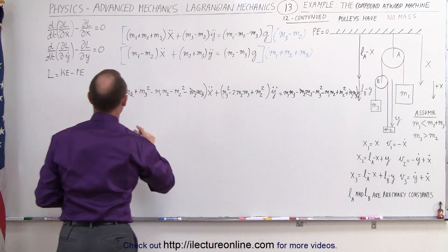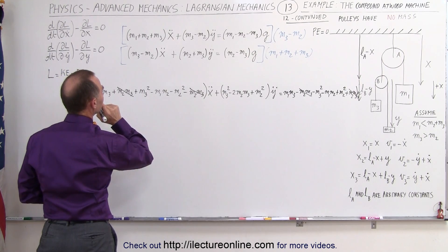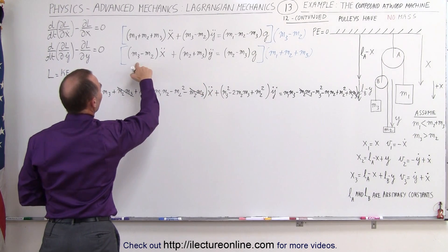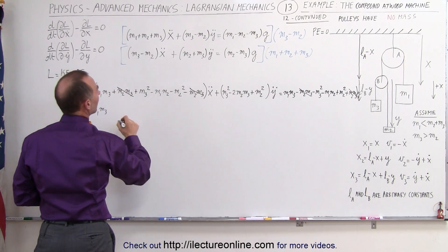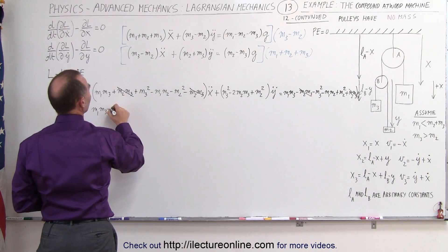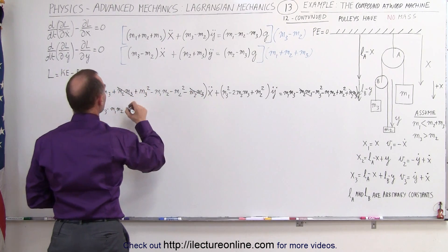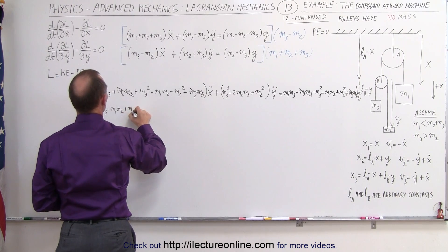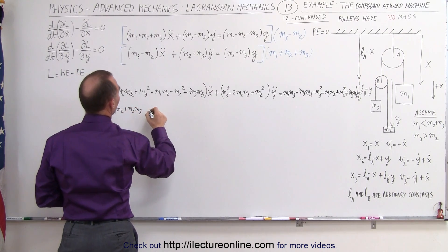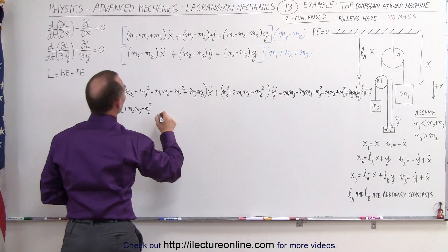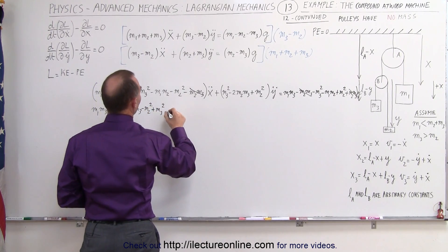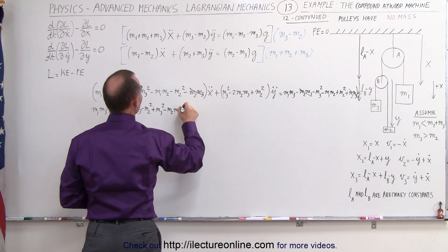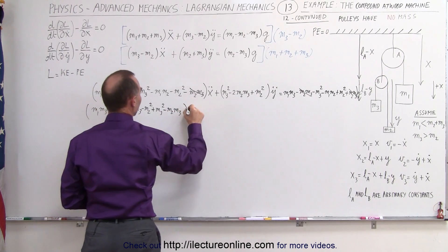Now doing the second equation: multiplying through, we have m1m3, m1m3, minus m1m2, plus m2m3, minus m2m3, minus m2m3, all multiplied times x double dot. We can simplify right away: m2m3 and minus m2m3 cancel out.